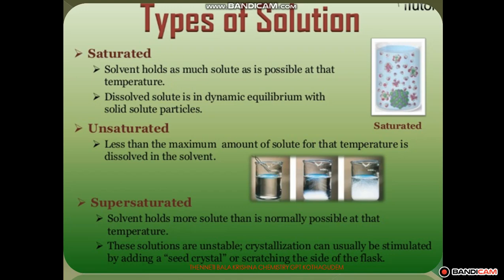The maximum amount of solute dissolved in a solution at a given temperature is called a saturated solution. For an unsaturated solution, the maximum amount of solute for the temperature is not yet dissolved. A solution in which the amount of dissolved solute is less than that required for saturation is called an unsaturated solution. If a small amount of solute is added to an unsaturated solution, that solute will dissolve. Less than the required amount of solute dissolved in the solution is called unsaturated solution.